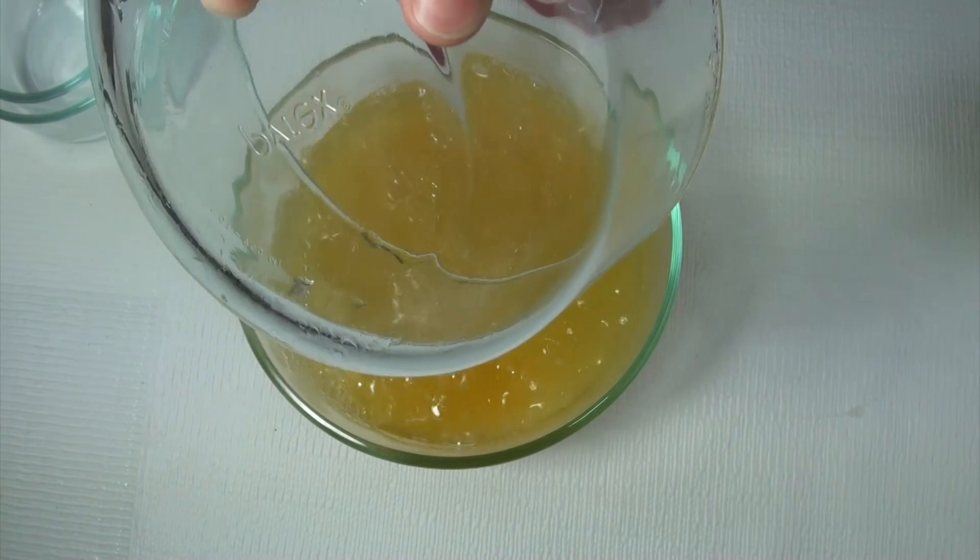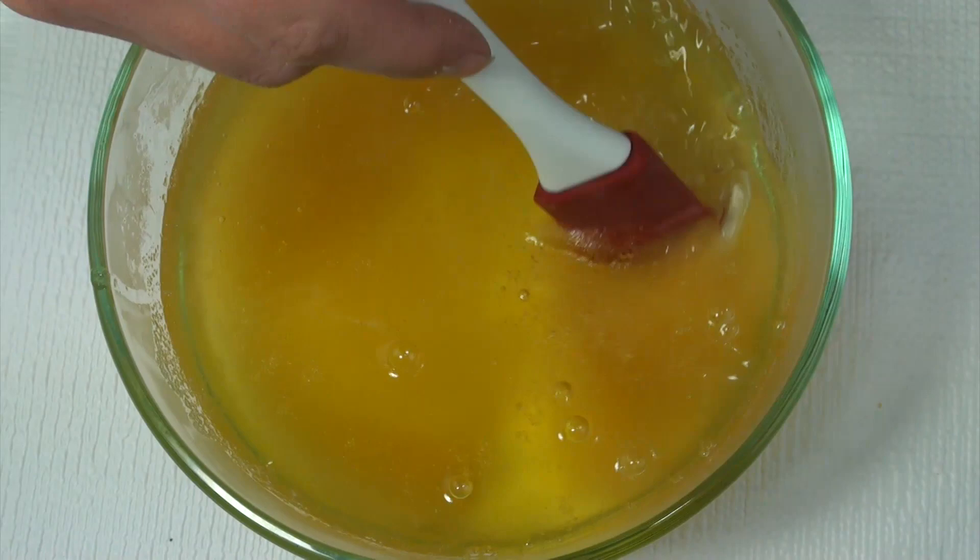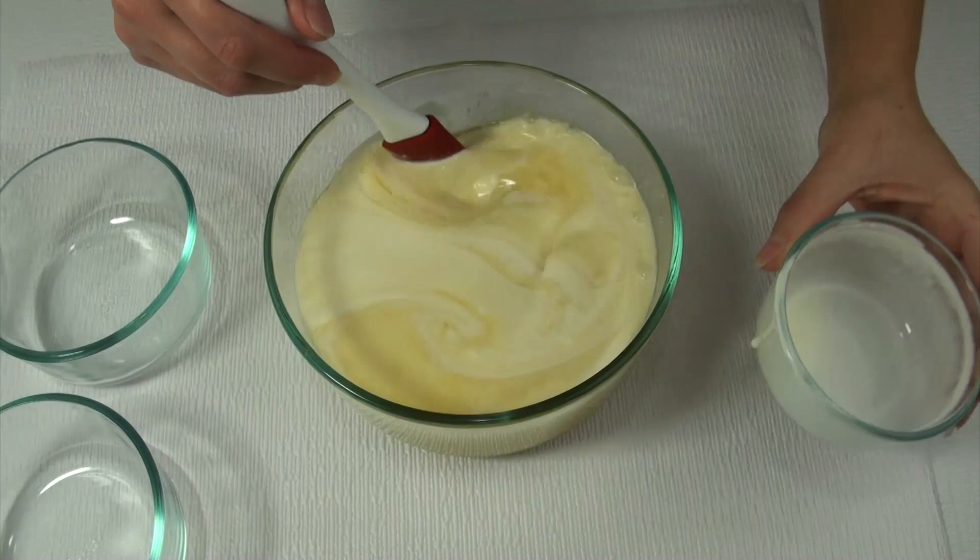Once it's come to room temp, you can add in three quarters of a cup of heavy cream and then mix that up again. Now separate your mixture into as many colors as you would like to.